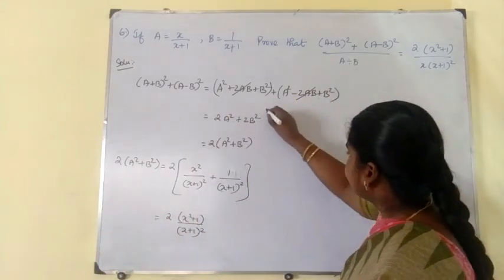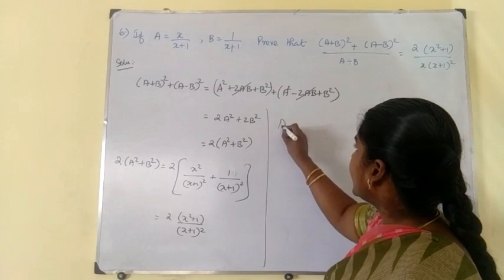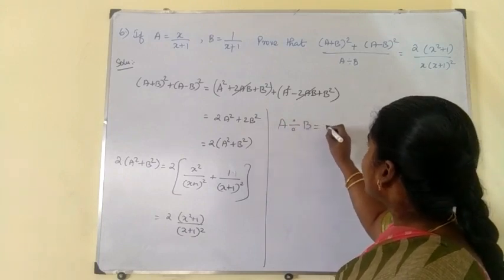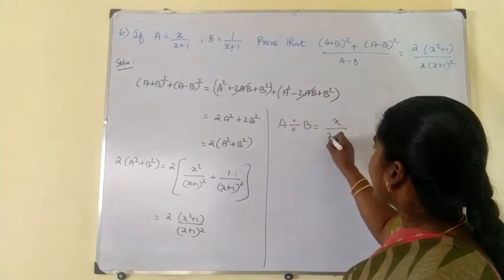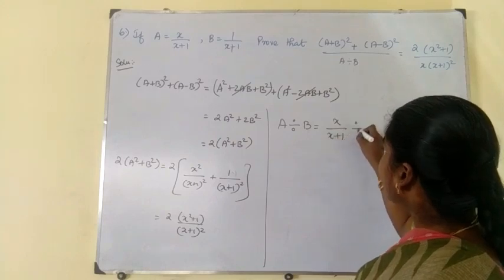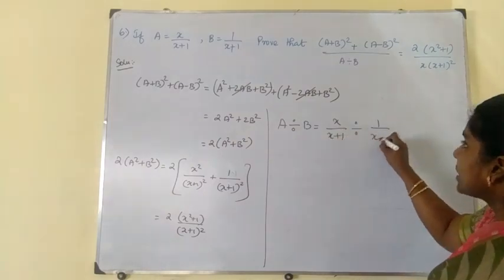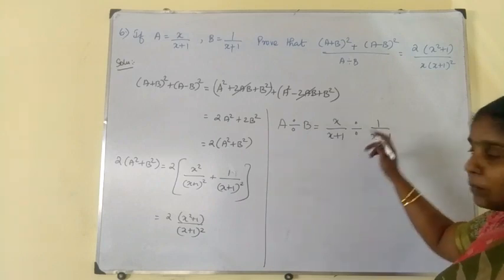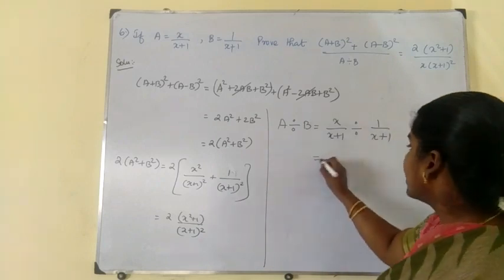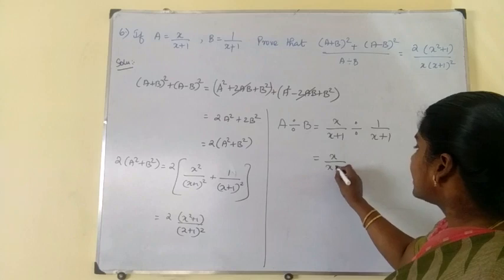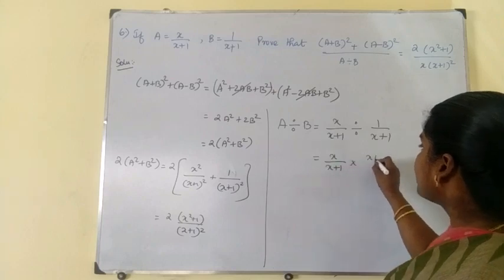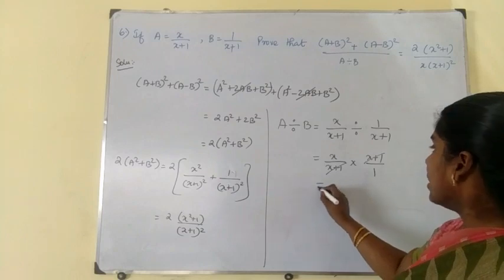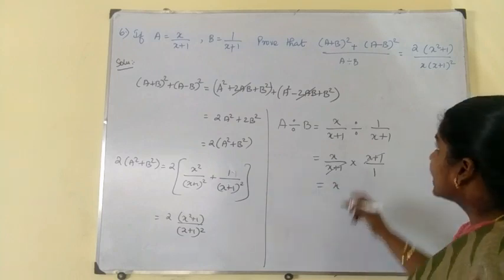Next, find a divided by b. A divided by b is x by x plus 1, divided by 1 by x plus 1. Division means multiply by the reciprocal, so x by x plus 1 into x plus 1 by 1. The x plus 1 cancels, giving a divided by b equals x.